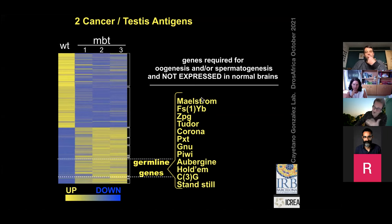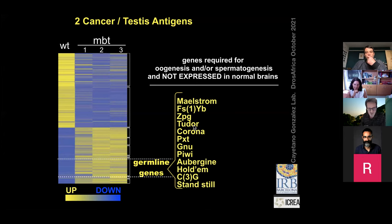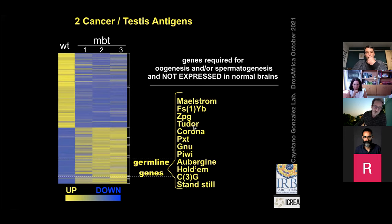Those of you familiar with Drosophila oogenesis and spermatogenesis will be shocked to recognize names like Aubergine, C3G, Maelstrom, and Tudor. These are genes normally expressed in the germline — most of them in the female germline, some in both testes and ovaries — and definitely not expected to be expressed in a brain. But these are tumor brains; they are dysregulating genes, and this is what we found.